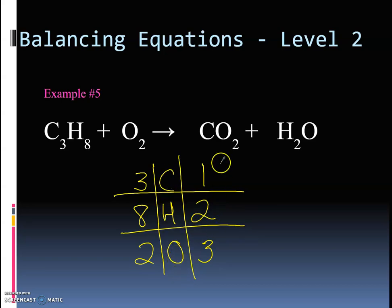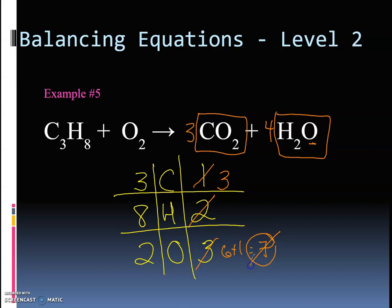So if you have three carbons, I need to put a three out in front of here. That will change my carbons and my oxygens. So that's going to be three here, and three times two is six plus one more, giving me seven on the right hand side. Alright, now I have my hydrogens. Here is eight, here there are two. So eight divided by two, I need a four over here. So that means I'm going to change my oxygens again. So this is four times two, which is eight, that's even. And now I have three times two, which is six plus four, giving me ten on the right hand side.